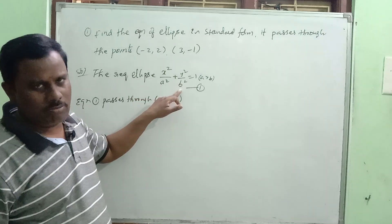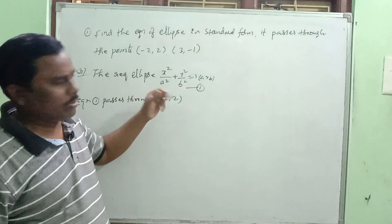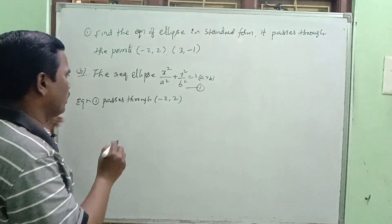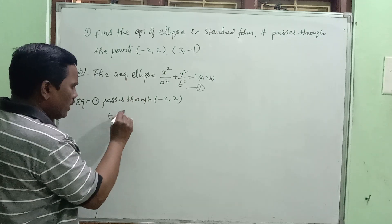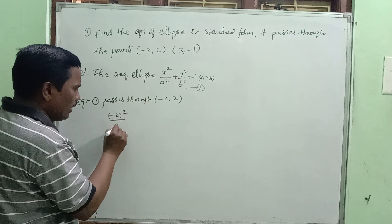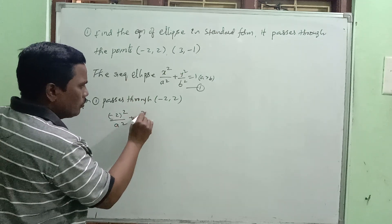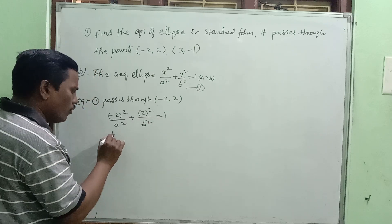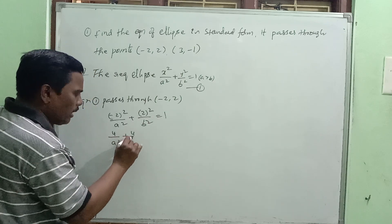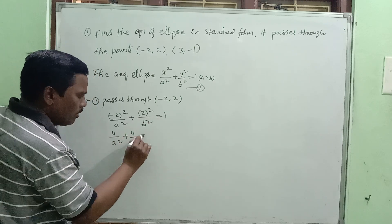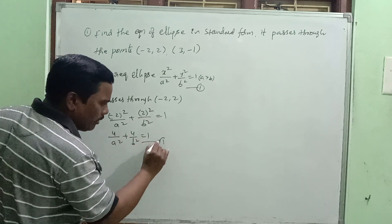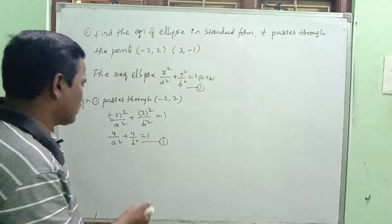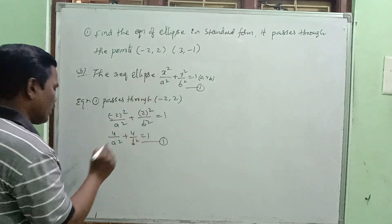Substituting the first point: x equals minus two, y equals two. So minus two whole square by a squared plus two square by b squared equal to one. That gives us four by a squared plus four by b squared equal to one. This is equation one.